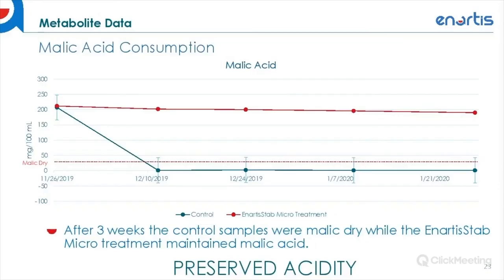Now we're getting into the metabolite data tracked over the two-month maturation period. Malic acid is a primary acid consumed by malolactic bacteria. After three weeks, the control samples were malic dry, while the Anardis Stab Micro treatments maintained malic acid — showing a preserved acidity in the treated wine.